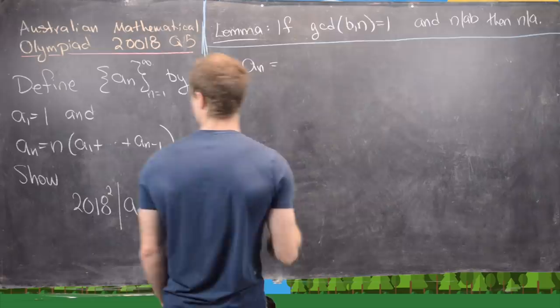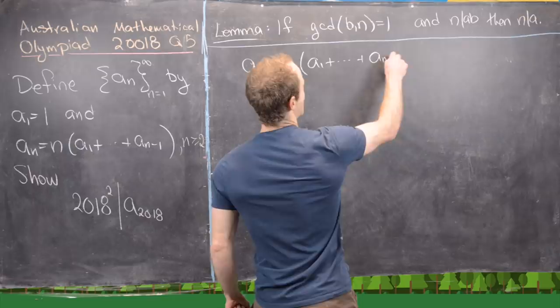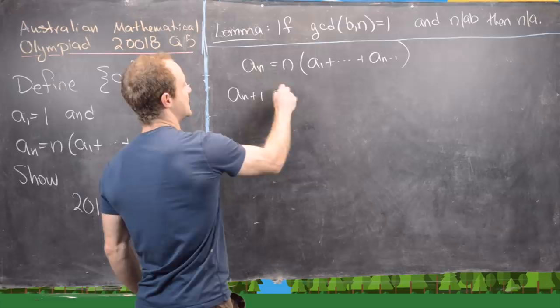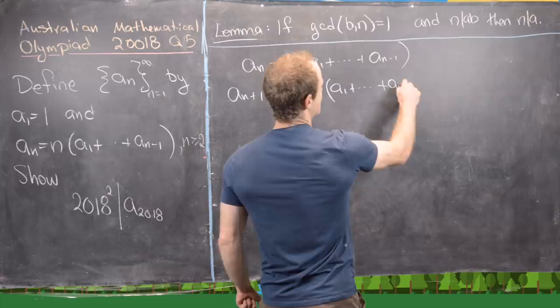And so I'm going to write out two statements and one is just this recursion right here. So we have a_n equals n times the quantity a_1 added all the way up to a_{n-1}. And the next one is that a_{n+1} equals n plus 1 times a_1 all the way up to a_{n-1} plus a_n. So those are just the recursions for a sub n and a sub n plus 1.